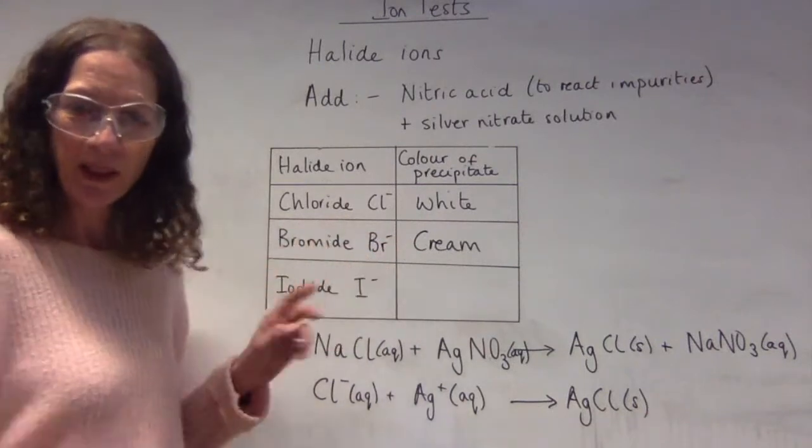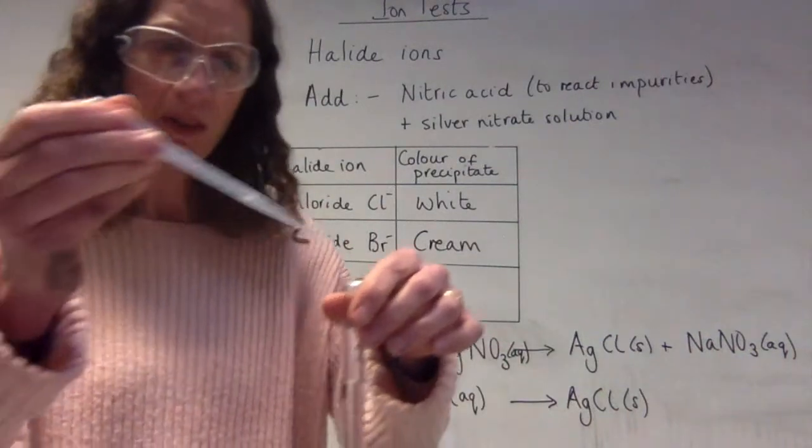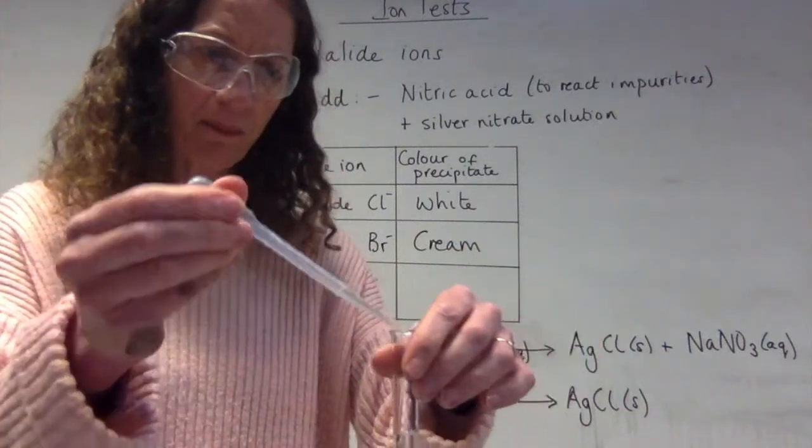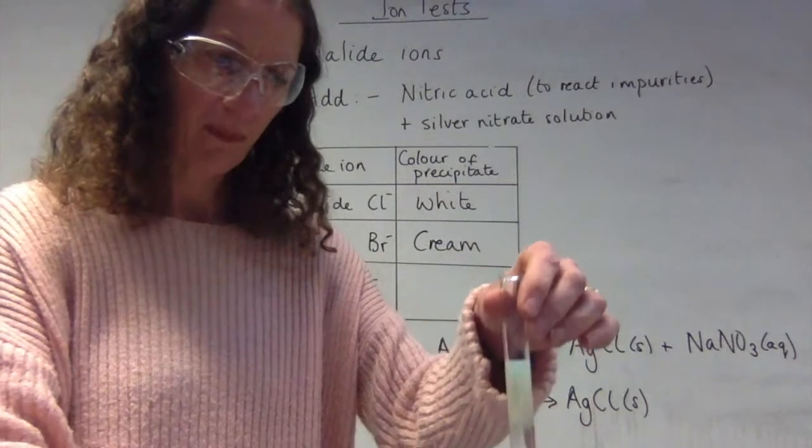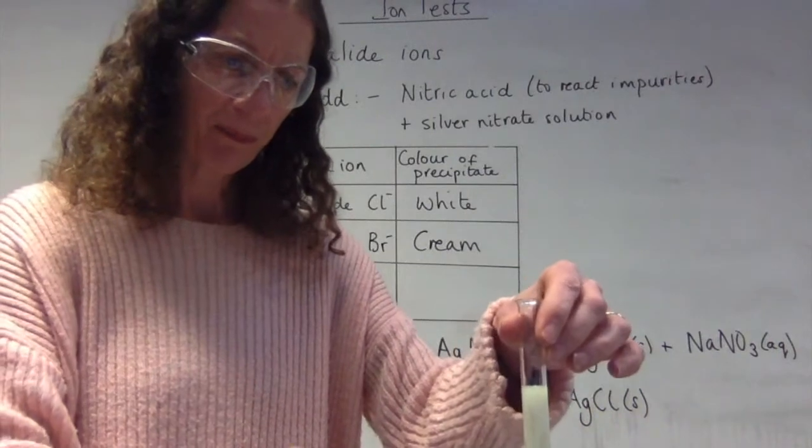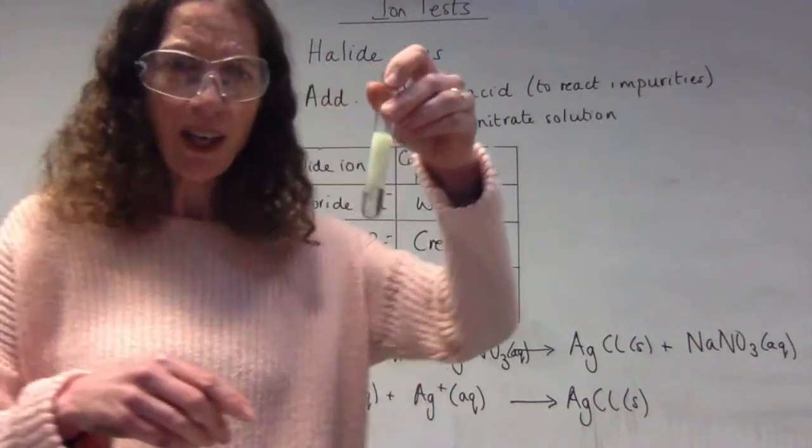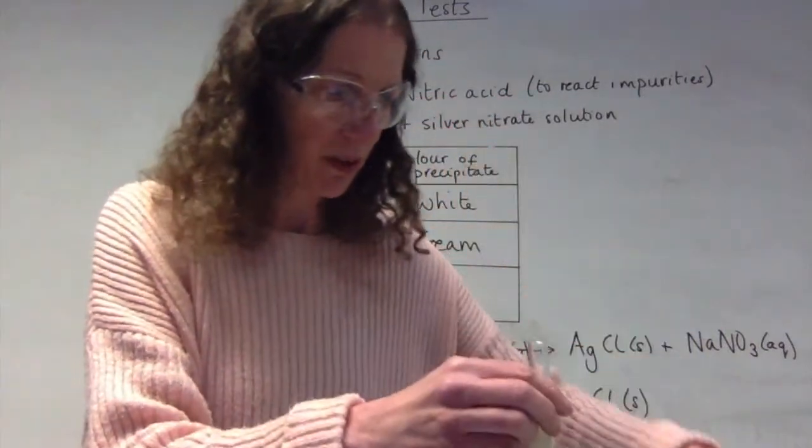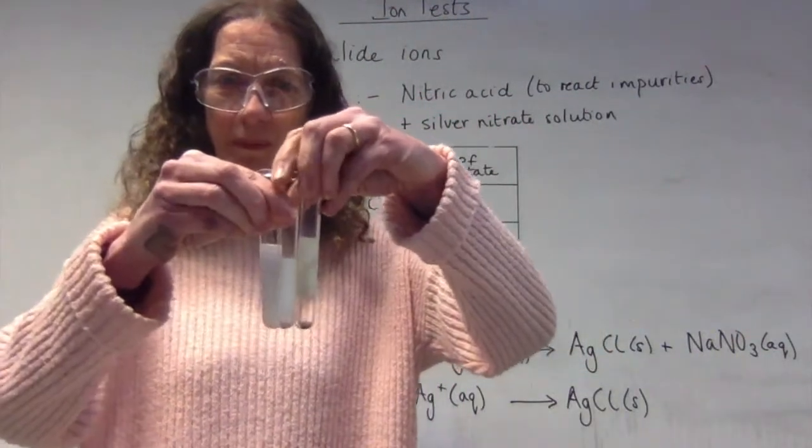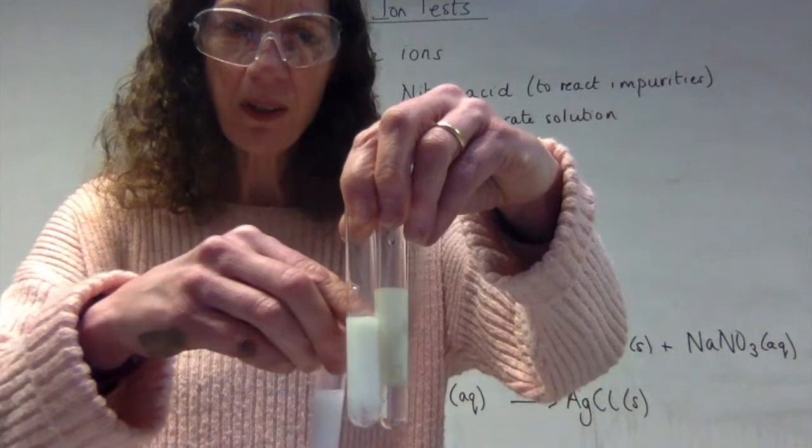So again the drops of the nitric acid I'm going to add to it and then I'm going to add the silver nitrate. See the precipitate forming. Lovely yellow colour. So if I actually had these against each other if I lined them up without dropping them, hopefully you can see that it goes from being white to cream to yellow.